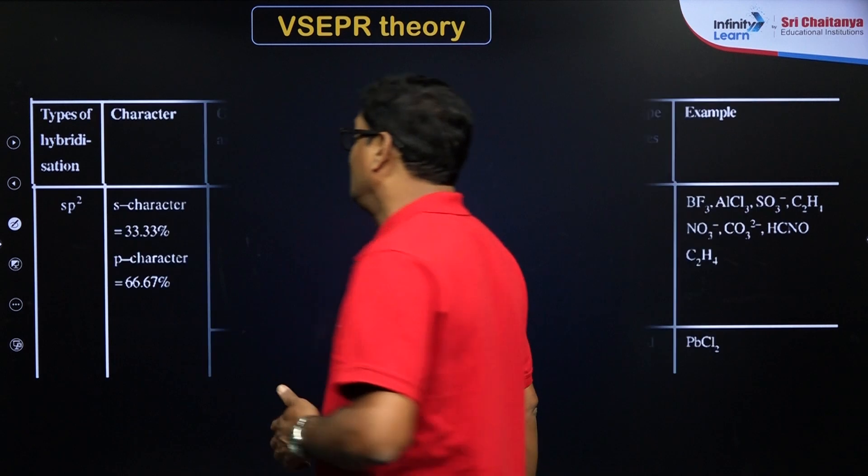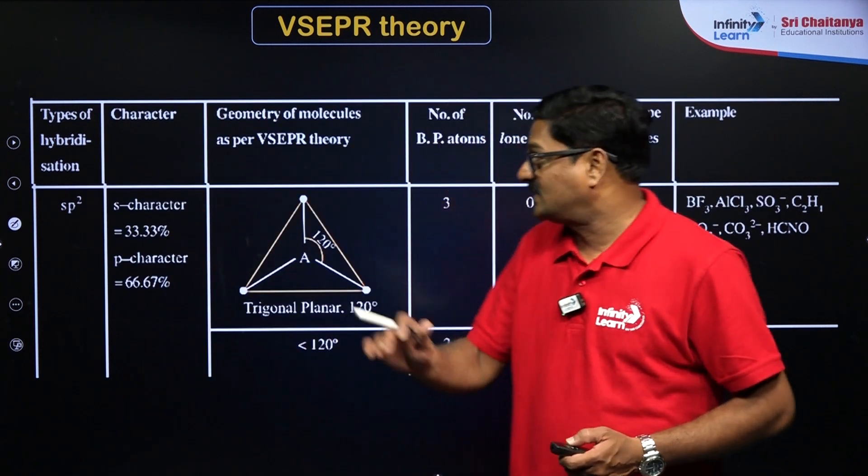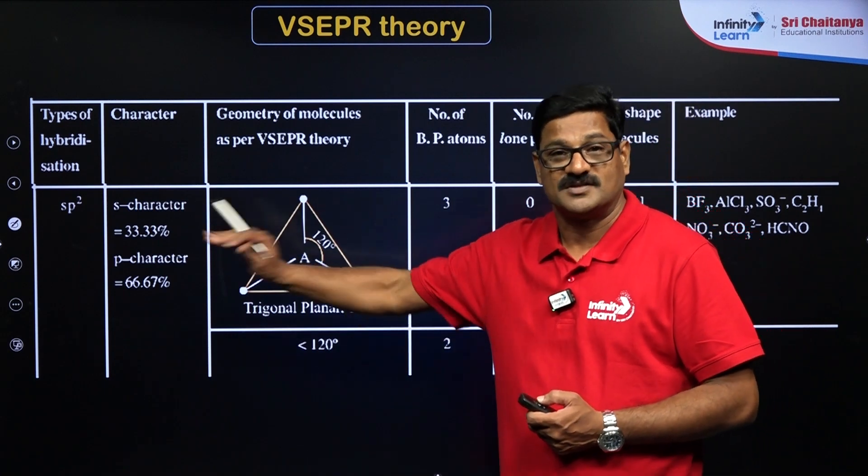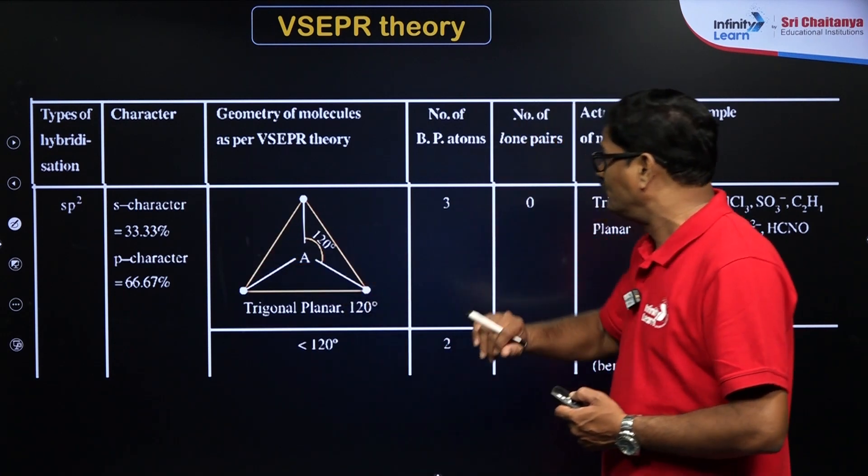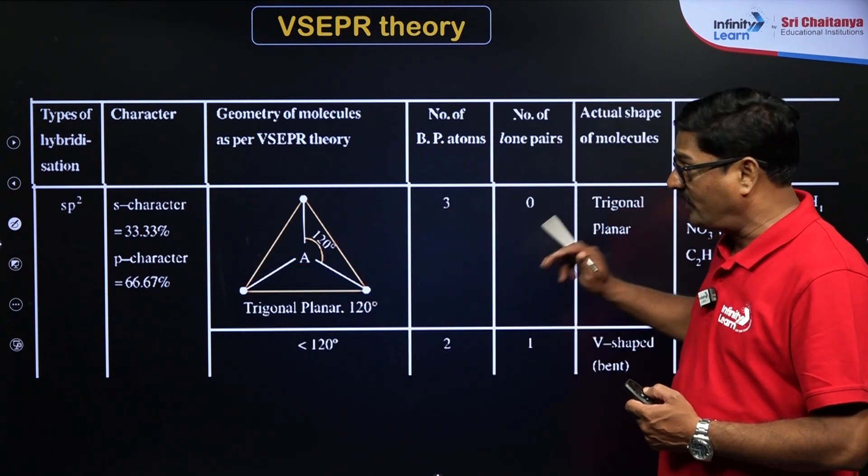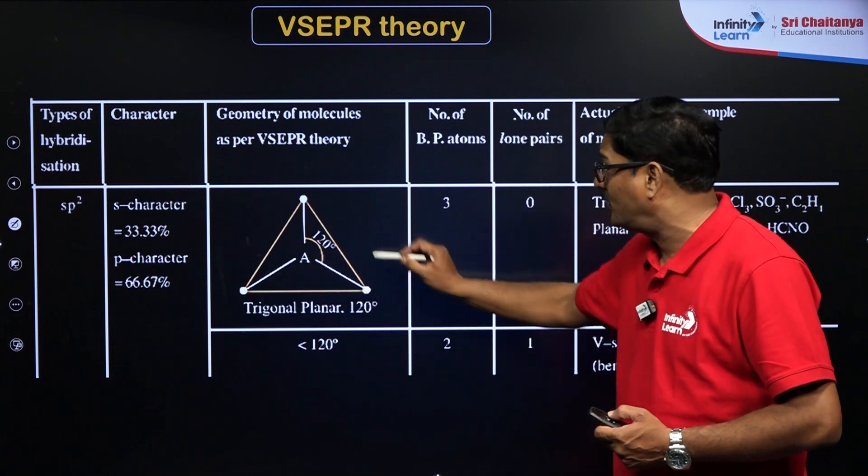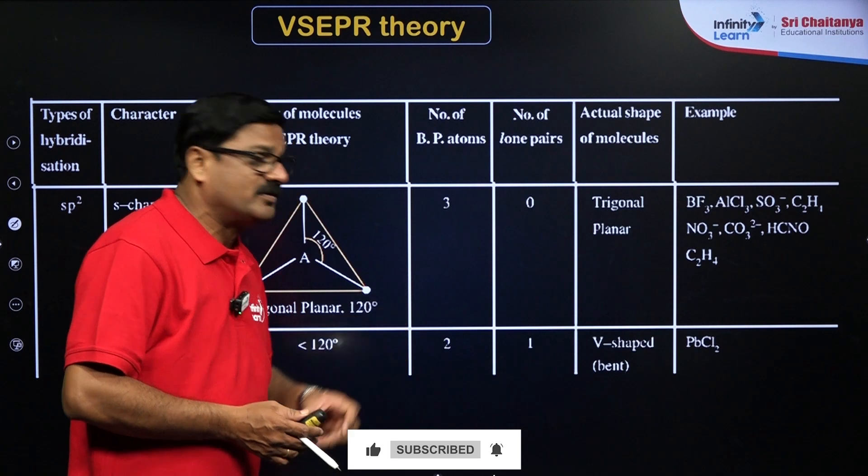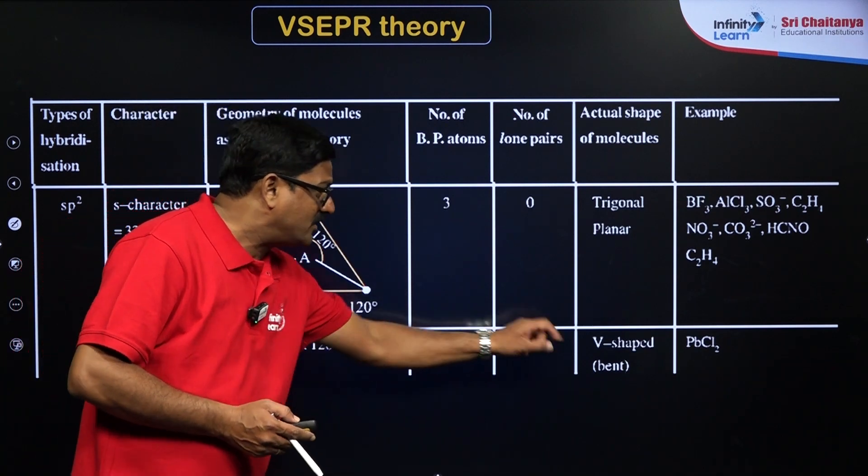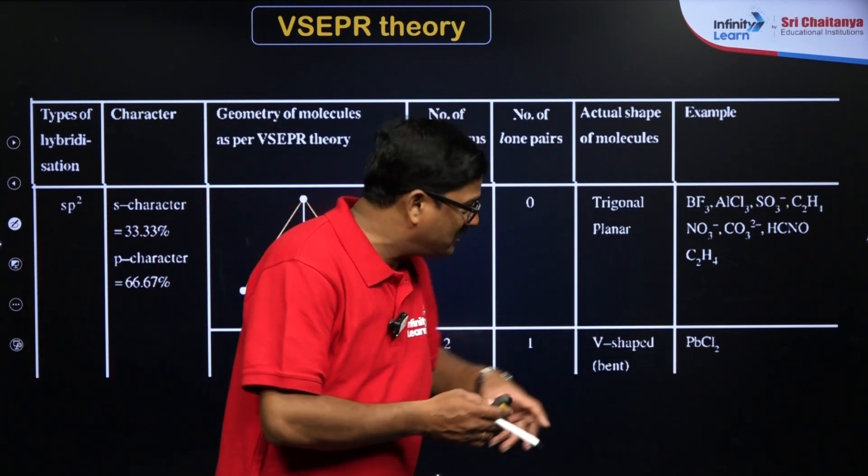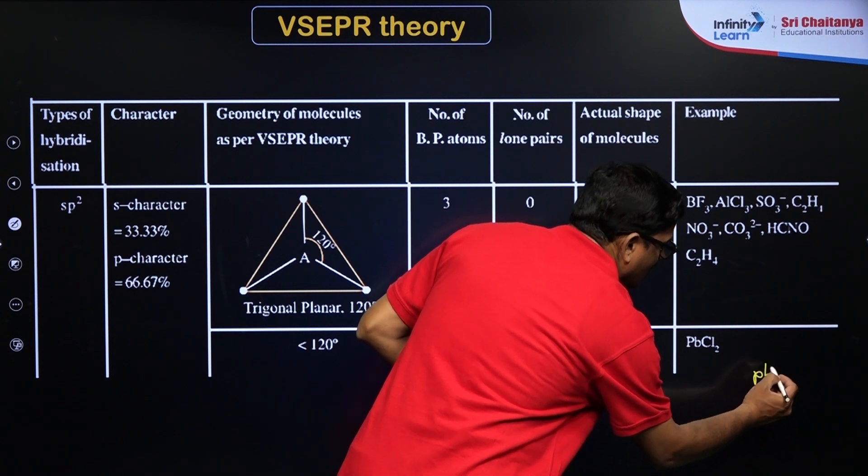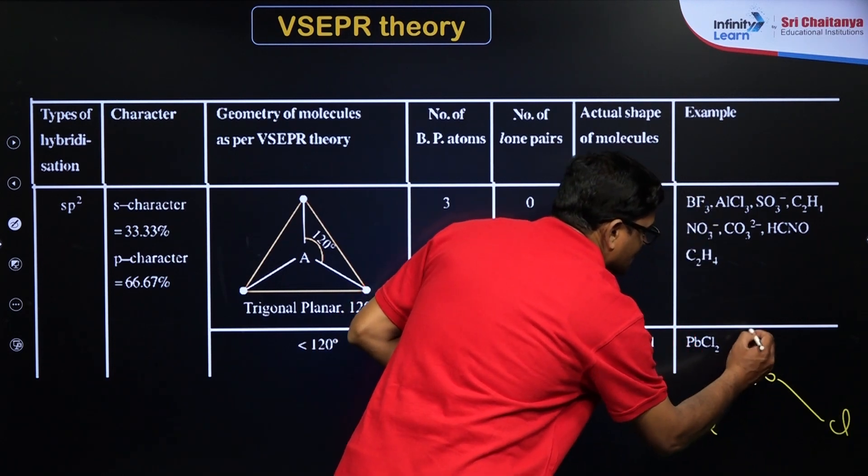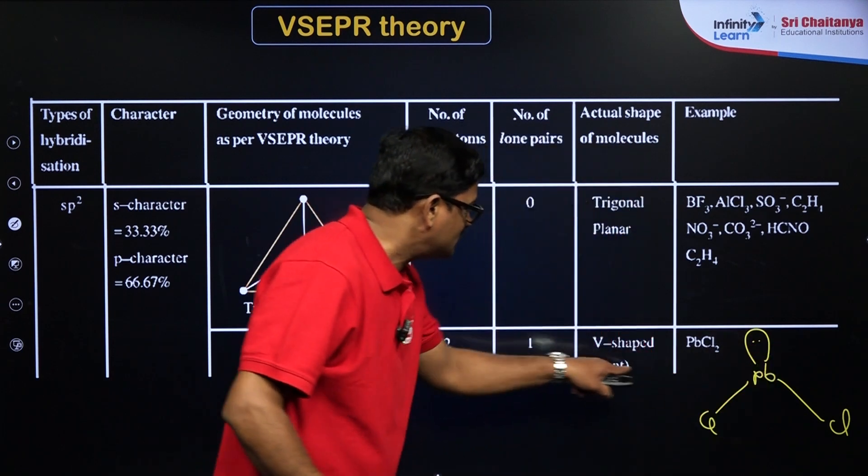And also you can say SP2. S character is 33.33 and P character is going to be 66.66. And if it has three bond pairs and no lone pair, it is going to have planar triangular shape. If it is going to have one lone pair of electron in it, it is going to have a bent shape, like that you can see PbCl2: Pb and chlorine and chlorine, and there is a lone pair of electron. It is a bent shape.